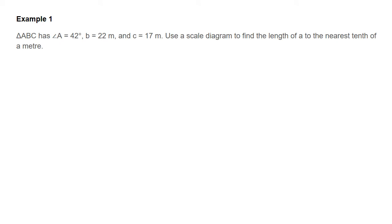In example one, we're told that triangle ABC has an angle A of 42 degrees, a side B of 22 meters, and a side C of 17 meters. We're asked to use a scale diagram to find the length of side A to the nearest tenth of a meter.